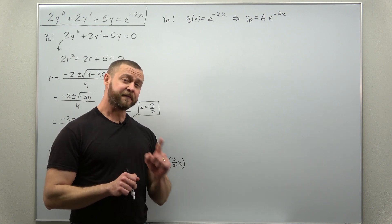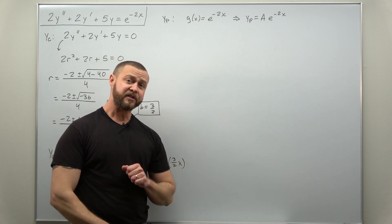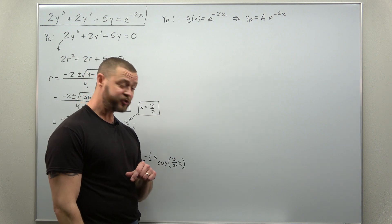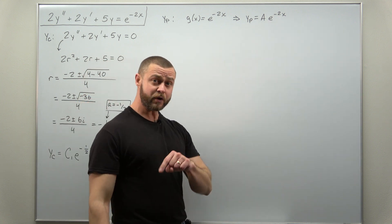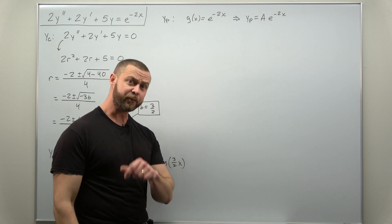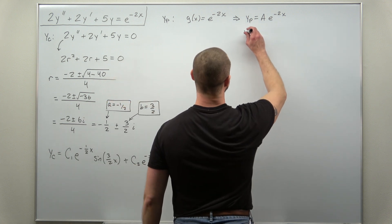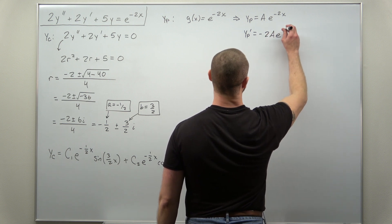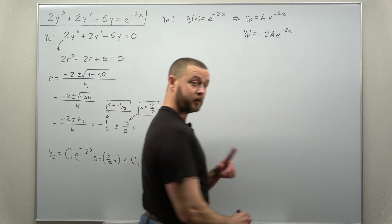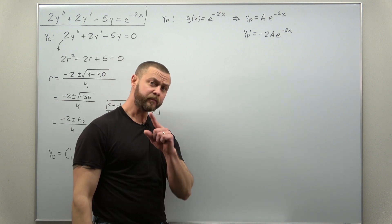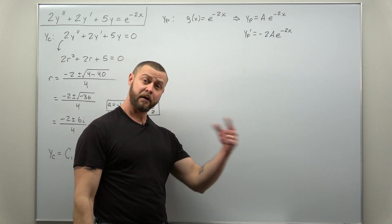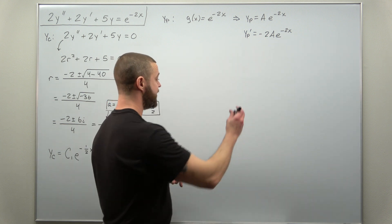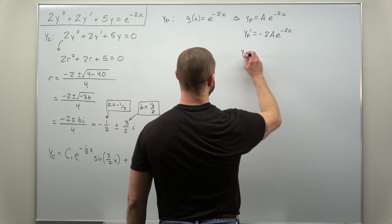We're going to have to calculate first and second derivatives of yp. That's going to be very simple using the chain rule. Each time you apply the chain rule here, you'll get a factor of negative 2 coming down. So for our first derivative, yp prime, looks like we get minus 2a times e to the negative 2x. And differentiate that again, you'll get another factor of negative 2 coming down, giving you positive 4a times the exponential.